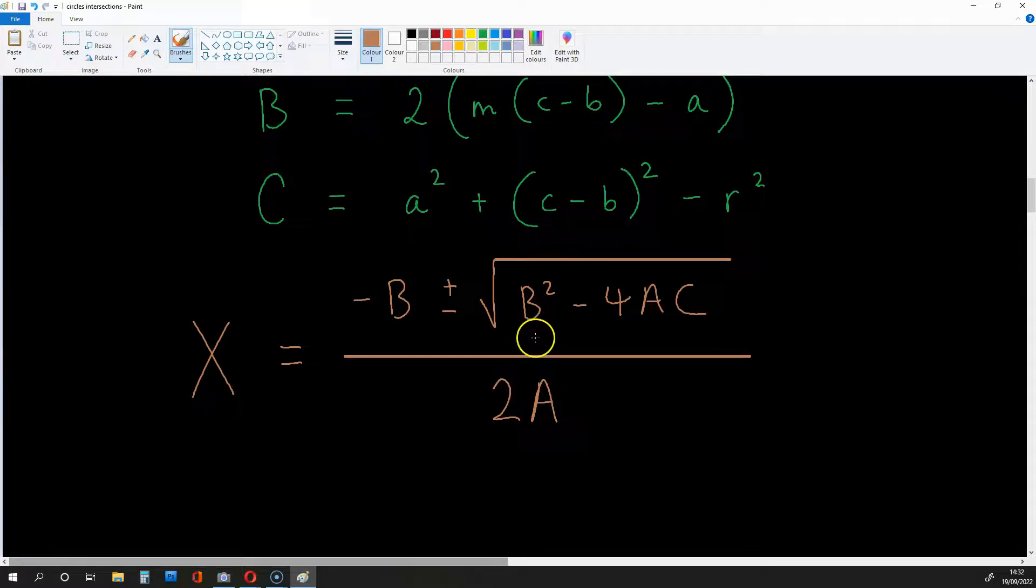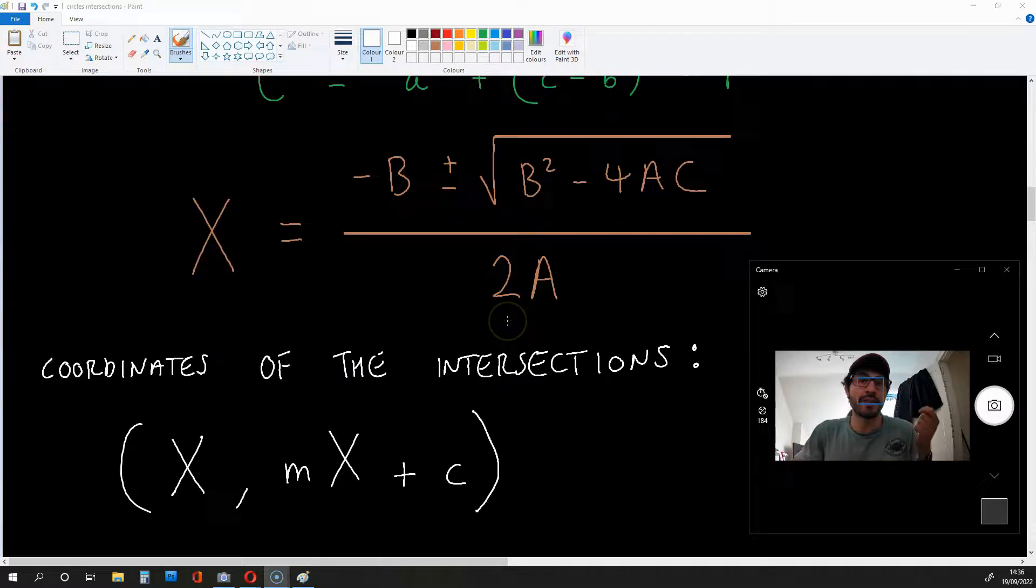Okay, let's call this value large X because we can plug this in to y equals mx plus c to get the y coordinates of the intersections. I know there's a lot of compression going on, but ultimately, with this value of large X here, we get the coordinates of the intersections. That is large X for x and m times large X plus c for y.